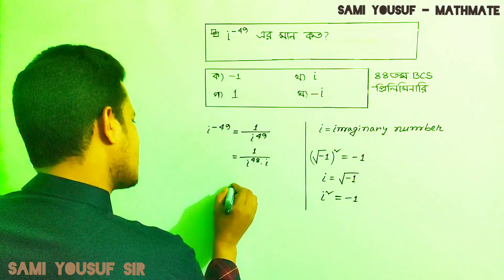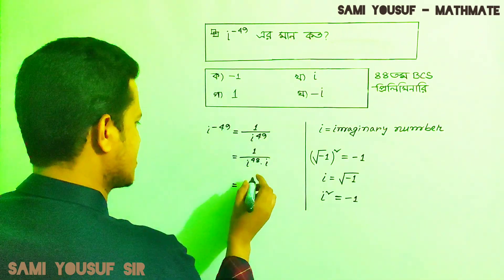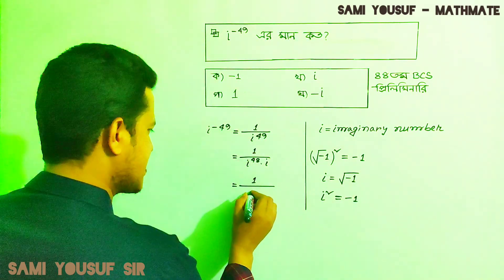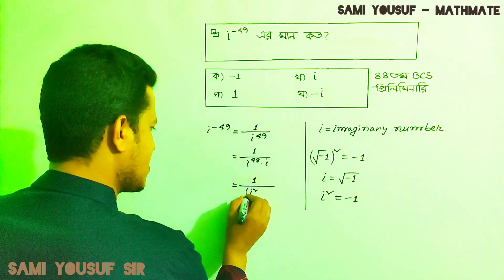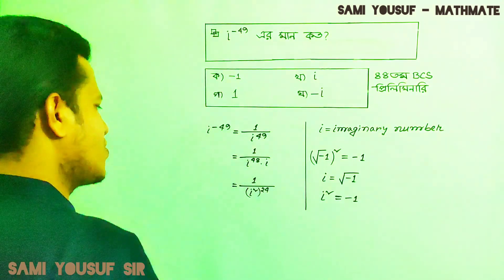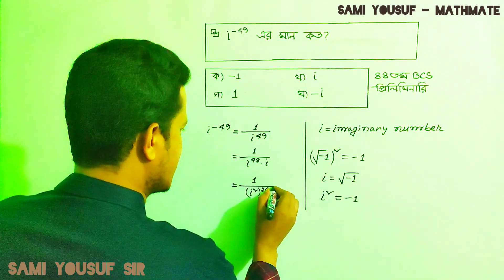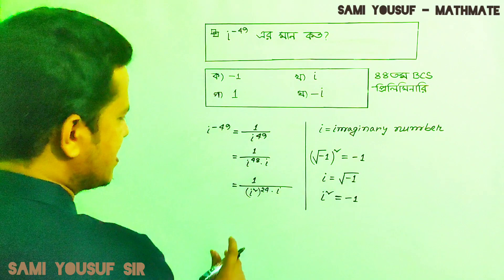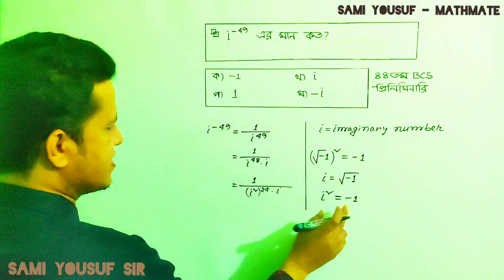If i squared is minus 1, we convert i to the power of 48, which equals (i²) to the power of 24. The value of i² is minus 1, so (i²)^24 becomes (-1)^24.